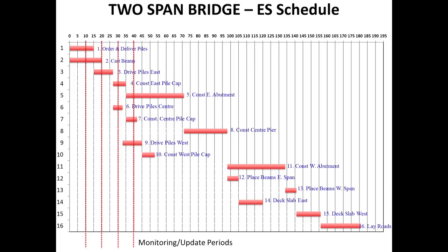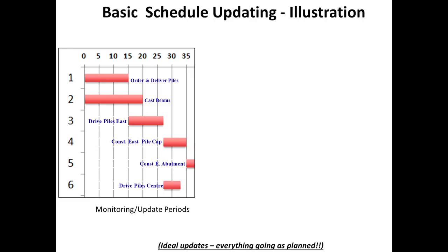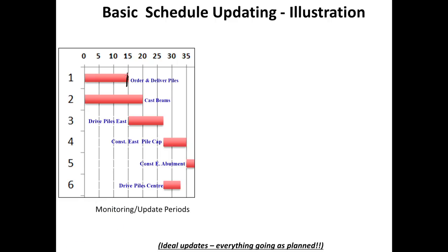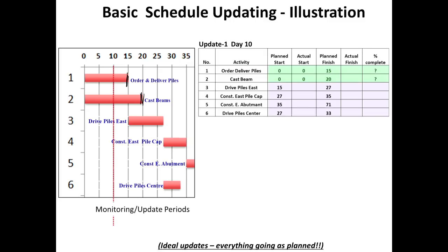We are taking a monitoring update period of every 10 days. What I am going to go forward with is this set of activities that I have circled, mostly for illustration purposes. Here I have got about 35 days of activities zoomed in. We have 6 activities listed: order and deliver piles, cast beams, drive piles east, east pile cap, east abutments, and center piles. You can see the planned early start schedule for each, going from 0 to 15, 0 to 20, and so on. Now, if we wanted to update the schedule, remember my monitoring is on every 10 days.